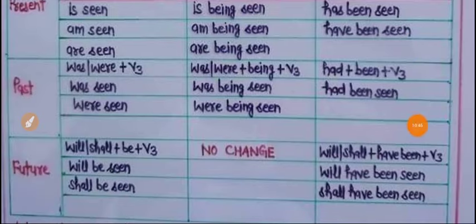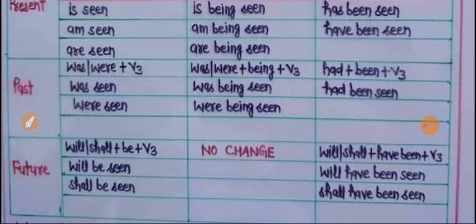Future tenses in passive voice: Future indefinite میں will/shall کے ساتھ be آئے گا — will be seen / shall be seen۔ Future continuous میں کوئی تبدیلی نہیں ہوگی — no change — future continuous tense کو passive voice میں نہیں بدل سکتے، یاد رکھنا ہے۔ Future perfect میں will/shall کے ساتھ have been آئے گا — will have been seen / shall have been seen۔ Future perfect continuous بھی passive voice میں نہیں بدلتا۔